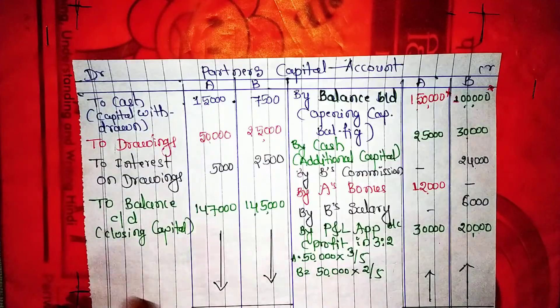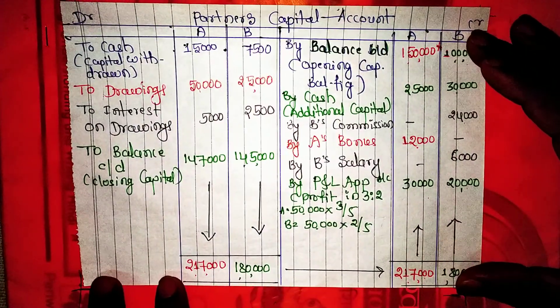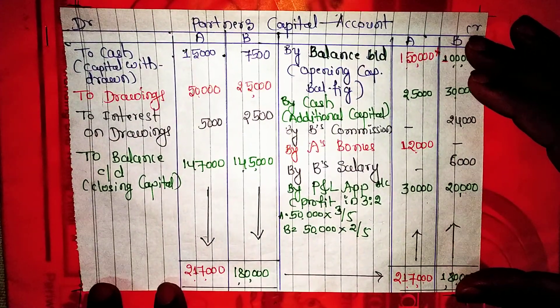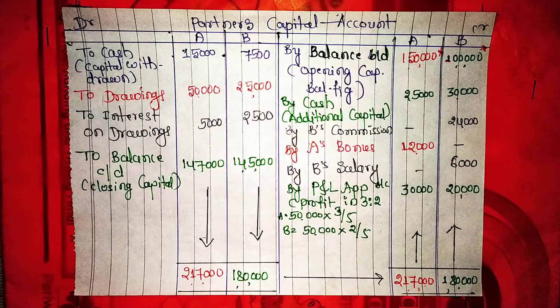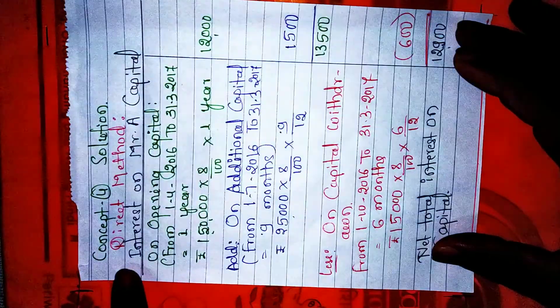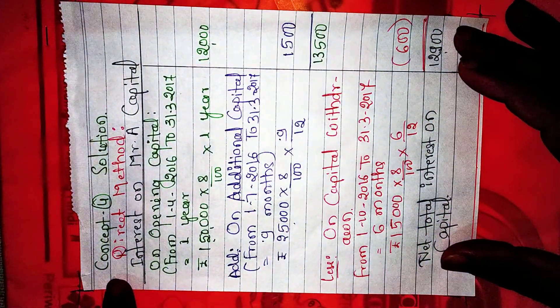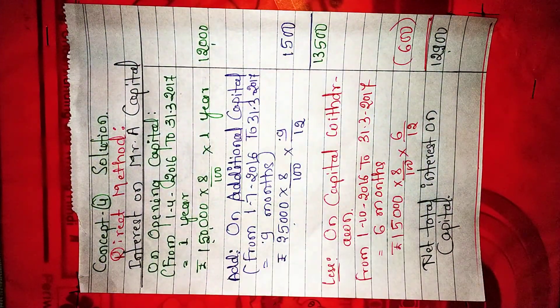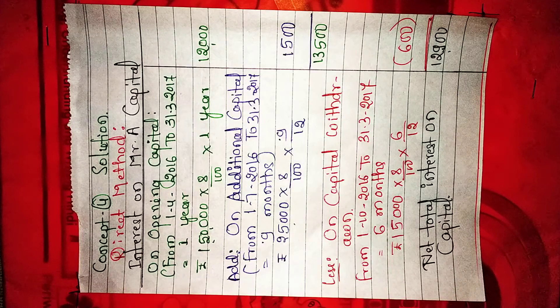Now you have the direct method. This is step number 1: opening capital. Step number 2: interest on capital. Direct method.